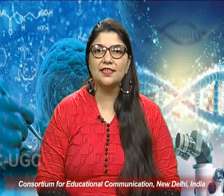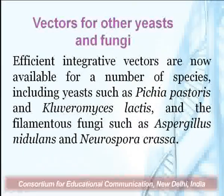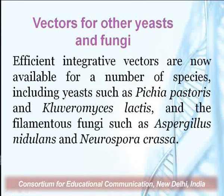So we have discussed yeast episomal plasmids, yeast integrative plasmids, yeast replicative plasmids, and yeast artificial chromosomes as cloning vectors in eukaryotes, particularly in the yeast system. These were based on Saccharomyces cerevisiae. There are also efficient integrative vectors available for other yeasts and fungi, including Pichia pastoris and filamentous fungi such as Aspergillus nidulans and Neurospora crassa, for which various vector systems have been developed to introduce foreign genes for expression or cloning.